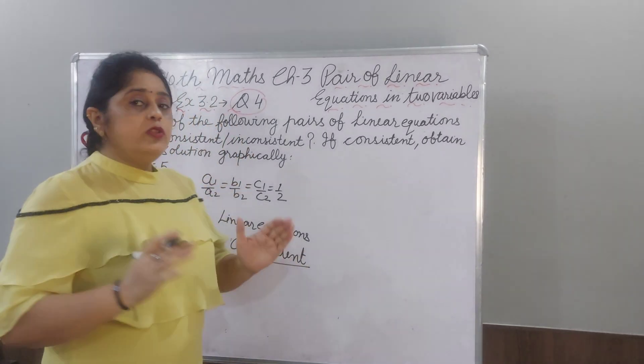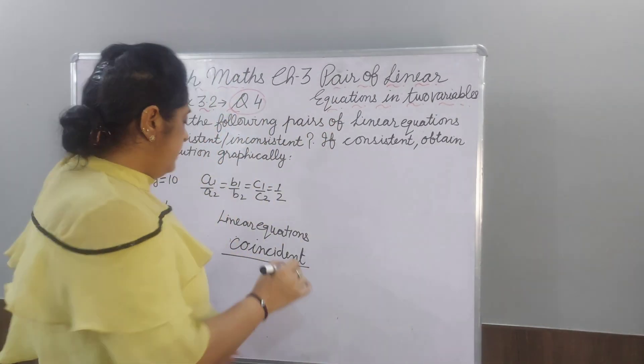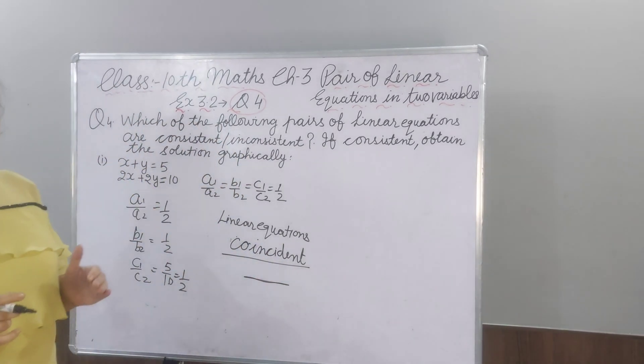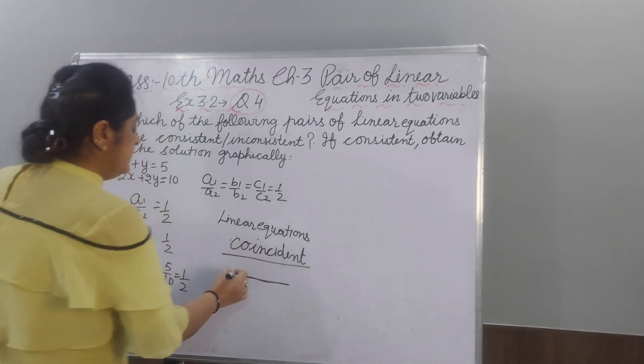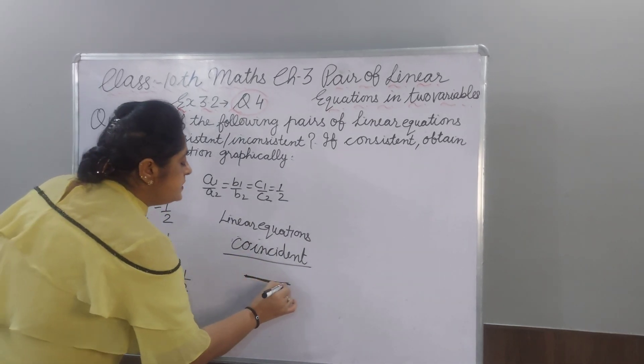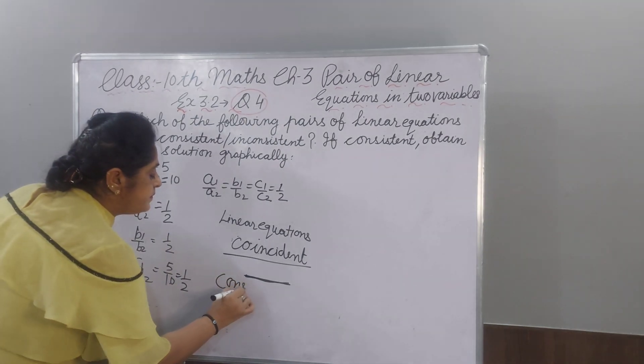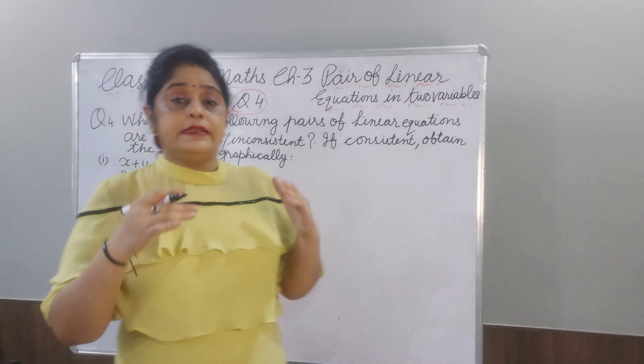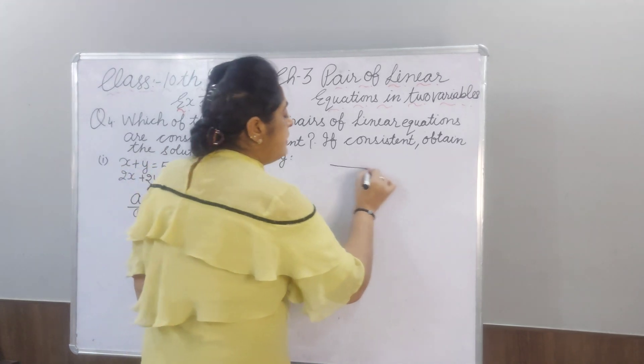Means both the lines will cover each other, means line, upper second line will cover them. And so, we will get the linear equation, and so it is consistent. Because we get infinitely many solutions. Now, we make a table, then we make a graph.